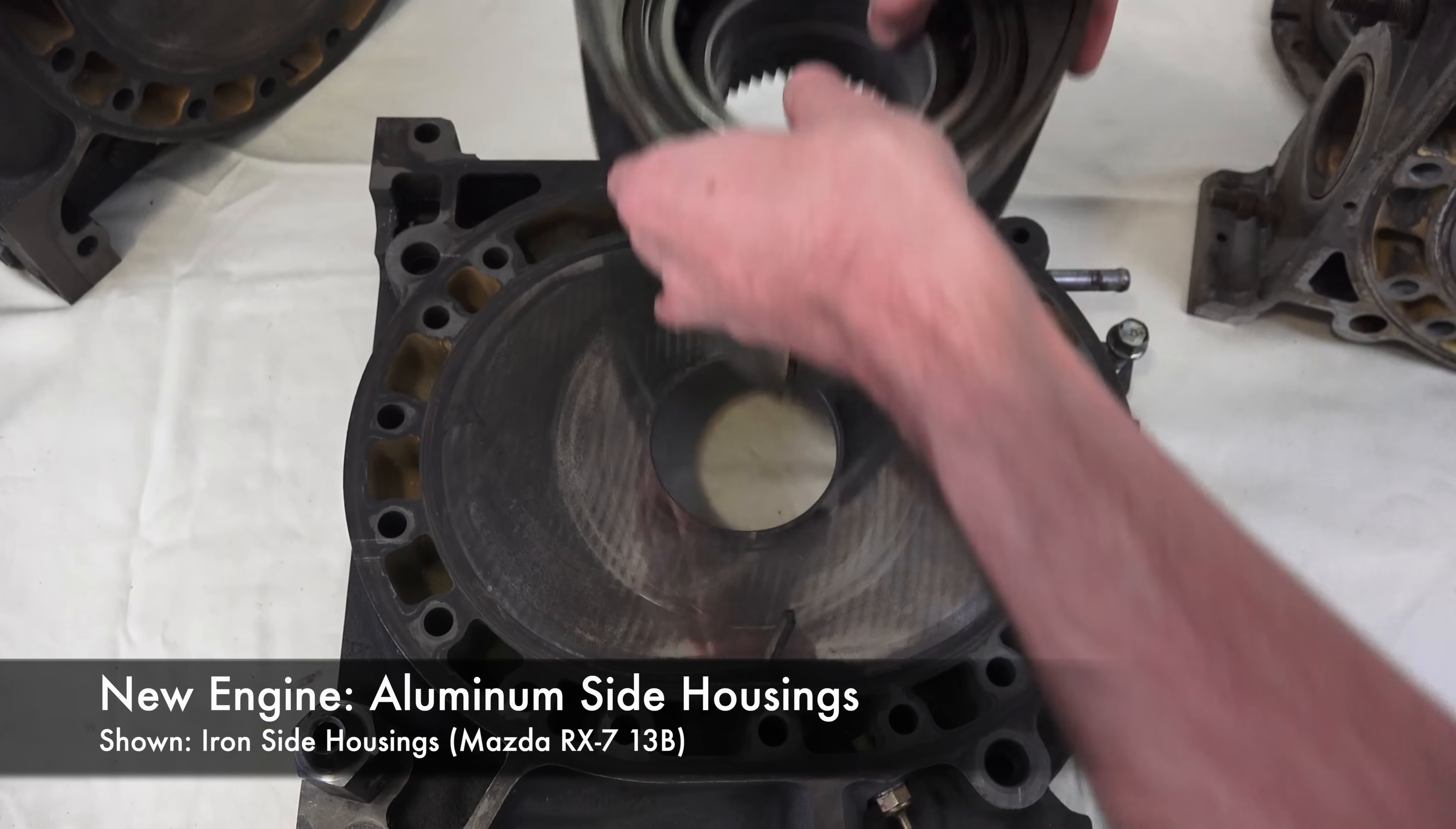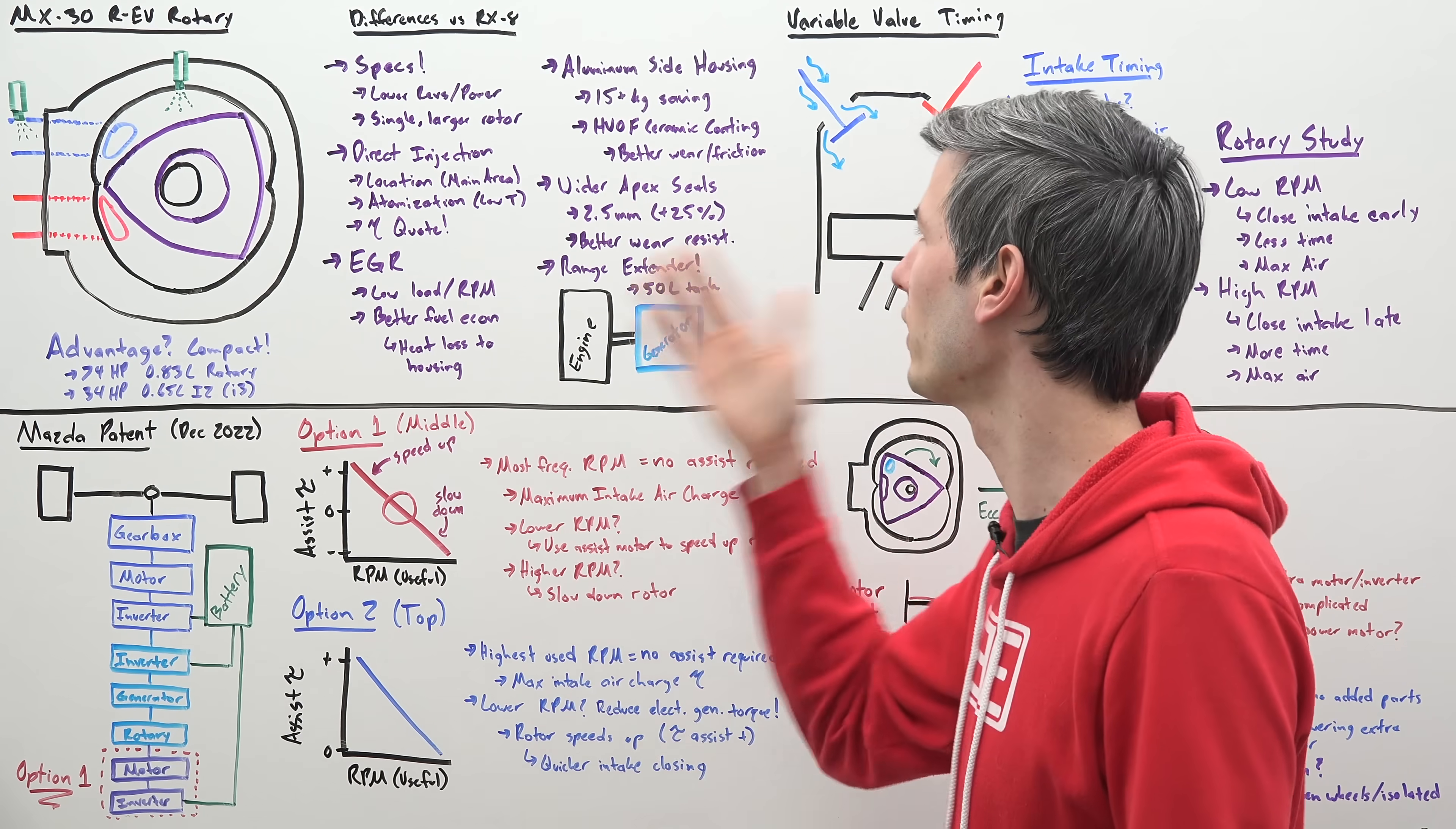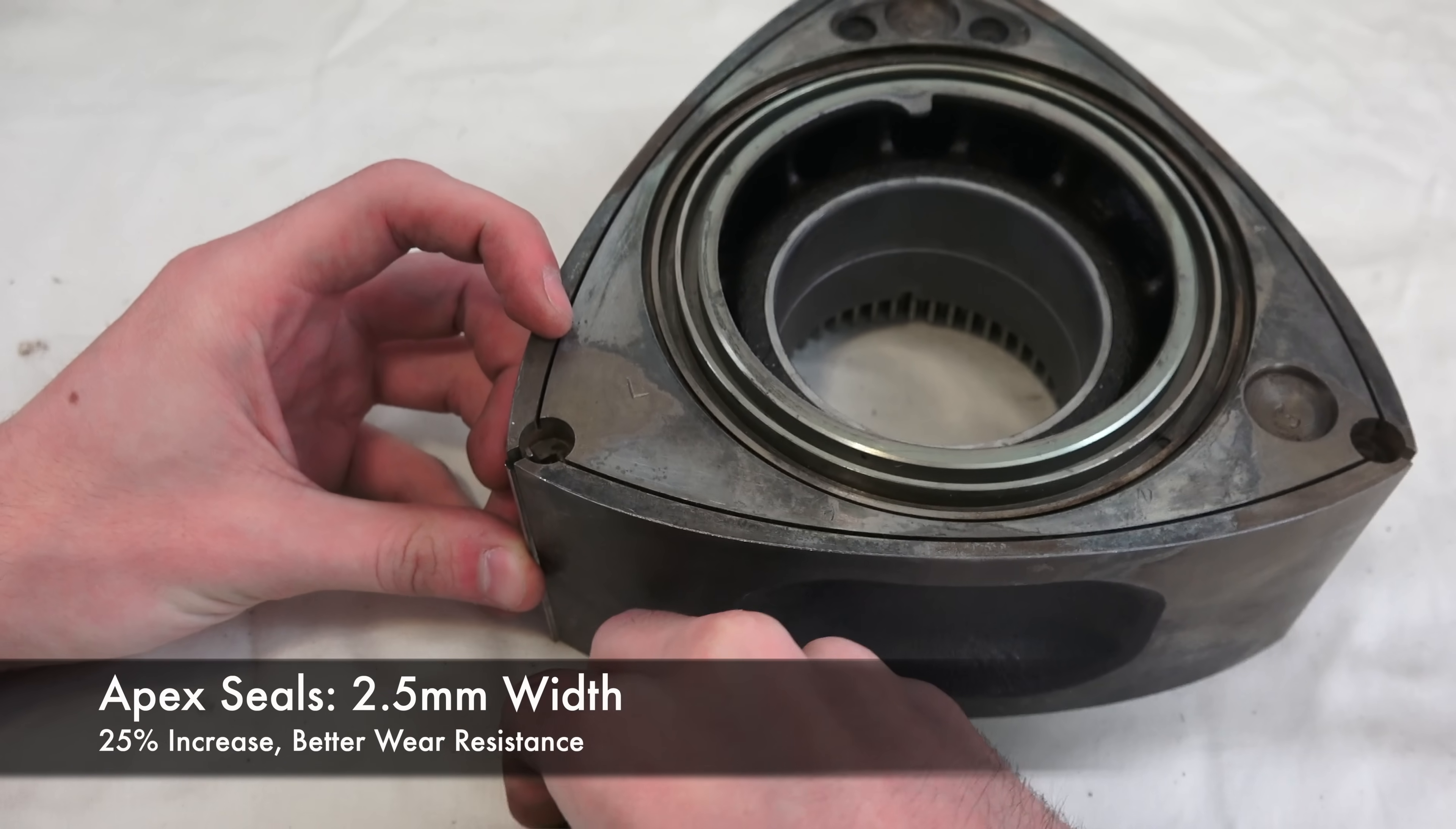We're now using aluminum side housings versus iron. Mazda says this is good for 15 kilograms of weight savings and they're also using a spray on plasma ceramic coating that they're applying to those housing sides for better wear and better friction. They also now have wider apex seals up to 2.5 millimeters a 25% increase which they say gives better wear resistance.